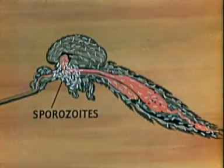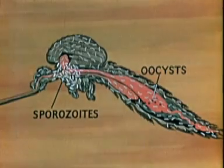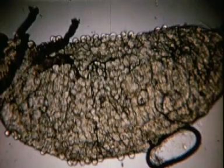Thus, sporozoites in the salivary glands, and oocysts on the stomach wall, are the evidence of infection. This stomach is exceptionally heavily infected; seldom would such a large number of oocysts be found during field surveys. These are seven days old, and are fairly large, about 40 microns in diameter.